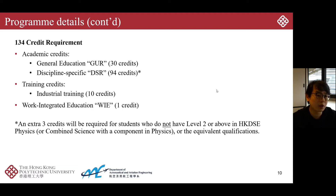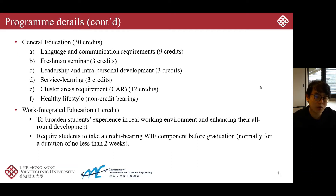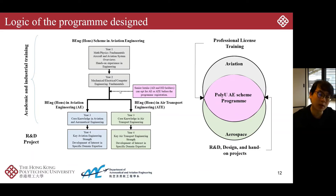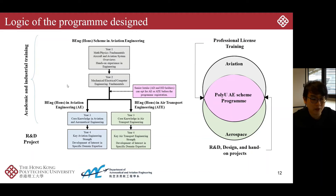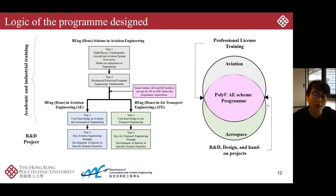Our program includes 144 credit requirements, comprising general education, discipline-specific subjects, and training components. The program design logic is: in the first two years, students mainly focus on academic and industrial training; then in Years 3 and 4, students can pursue research and development projects in their chosen area. Students can also enroll in one professional license training stream, which I will detail shortly.